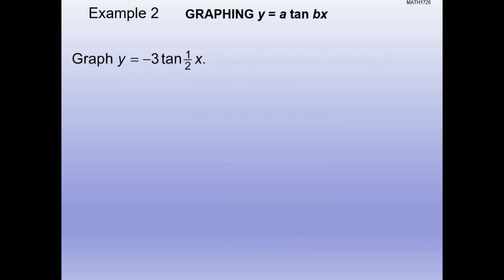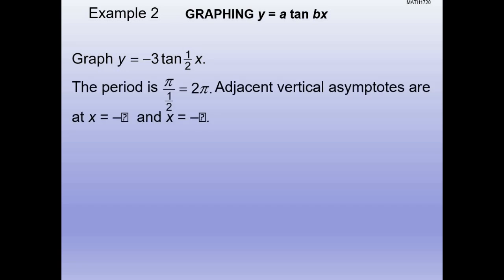Let's do this graph: y = -3 tan(x/2). Follow the steps — the parent form is y = a*tan(bx). Find the period first. b = 1/2, so the period is pi divided by (1/2) = 2 pi. Now find the adjacent vertical asymptotes: set (1/2)x = -pi/2 and (1/2)x = pi/2. Solving gives x = -pi and x = pi as the asymptotes.